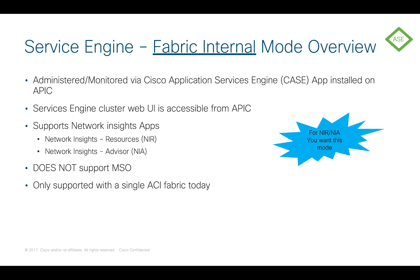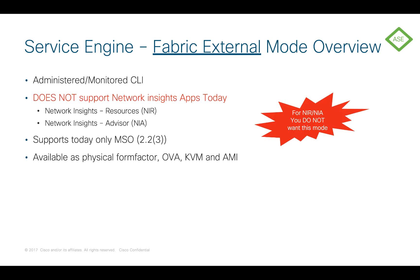Fabric Internal mode is a method of connecting the cluster directly to the ACI Fabric, and it allows you to access the user interface directly from APIC, making operations very familiar and cohesive. This is also the only mode as of today that supports Network Insights Resources and Network Insights Advisor. We will support other applications down the road, such as Multi-Site Orchestrator, but this mode does not support MSO and only supports a single fabric today — Multipod is supported, but not Multi-Site yet. Fabric External mode, by contrast, will not allow you to run anything Network Insights; it was primarily intended for Multi-Site Orchestrator.